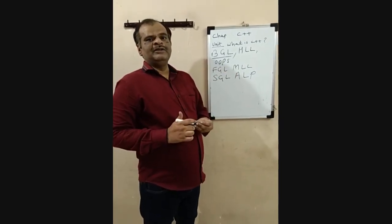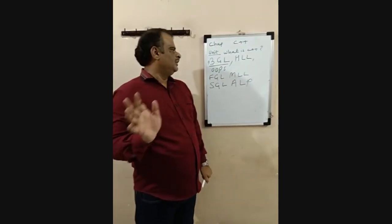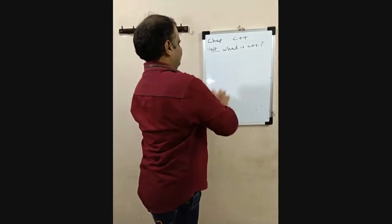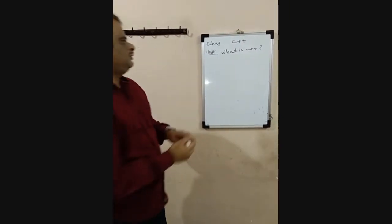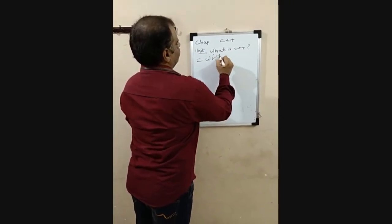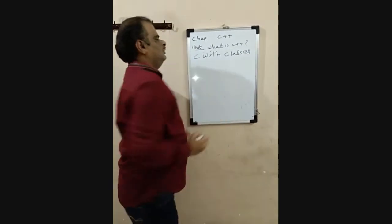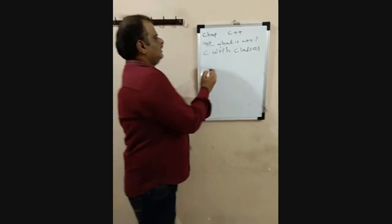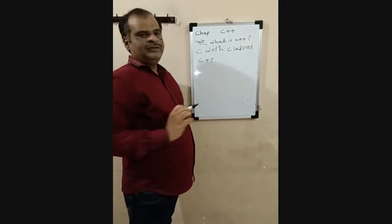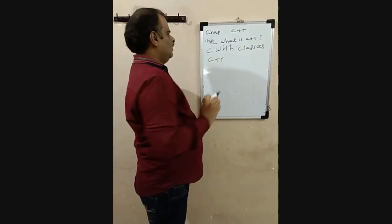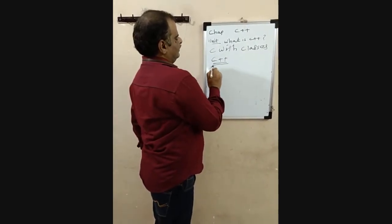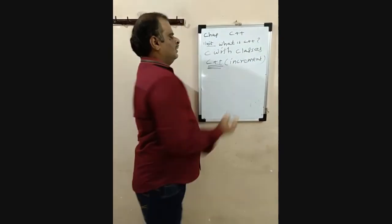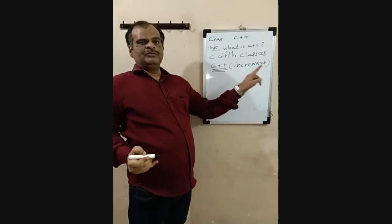The fourth and fifth generation languages are artificial intelligence generation languages. The old name of C++ is 'C with Classes,' and then it was replaced as C++. Why was it replaced by this name? Because it is an incremented version of the C language.